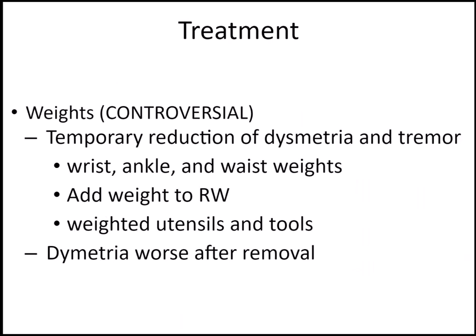Finally, the use of weights — ankle weights, wrist weights, or weighted utensils — is an older, now controversial approach. Weights provide a temporary reduction of dysmetria and tremor. However, research has shown that when weights are removed, dysmetria is actually worse. While weights dampen excess motion, they strengthen those muscles, resulting in even more extra motion after removal.